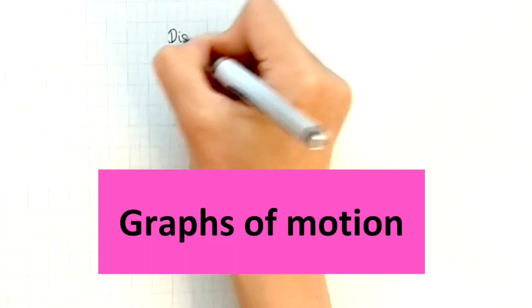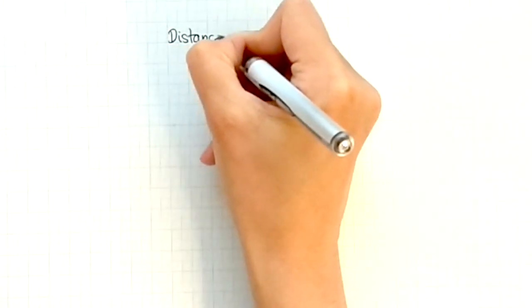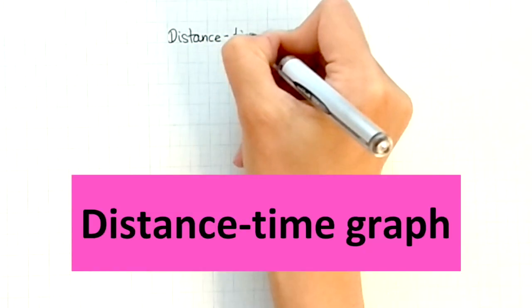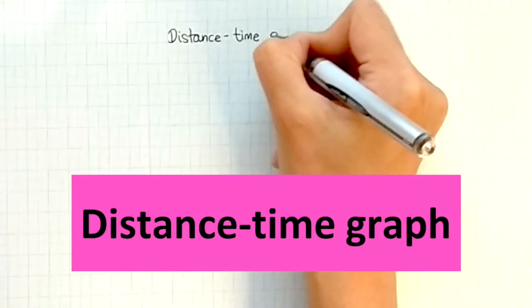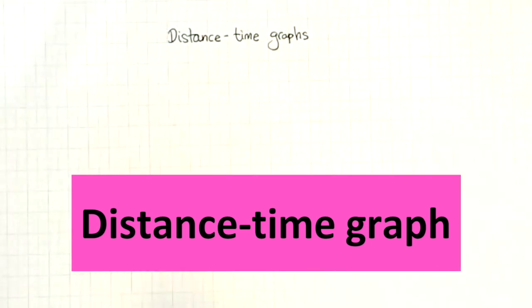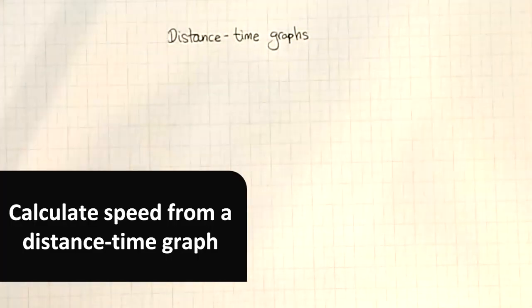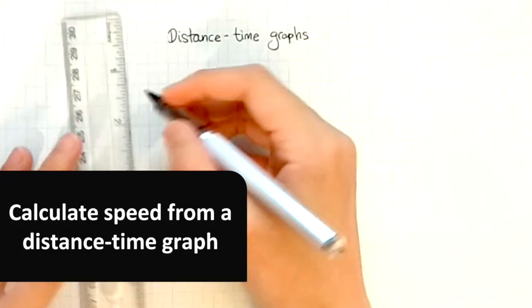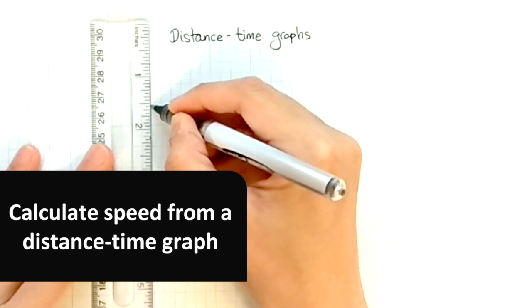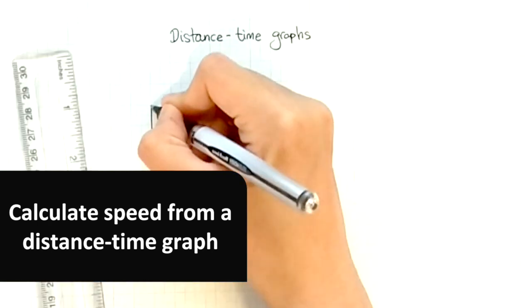There are different types of graphs to represent an object's motion. One of those graphs is a distance-time graph. For your GCSE exam, not only do you need to know how to draw a distance-time graph, you also need to know how to interpret a distance-time graph.